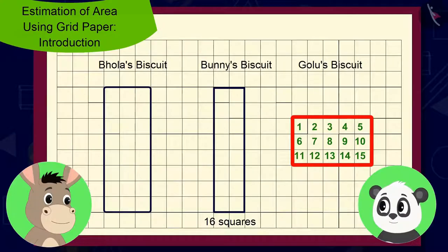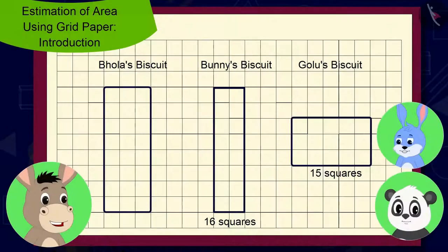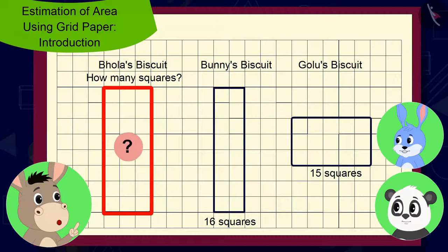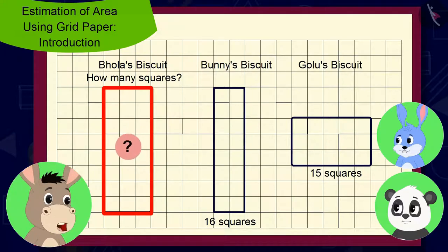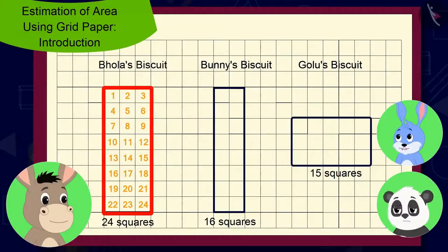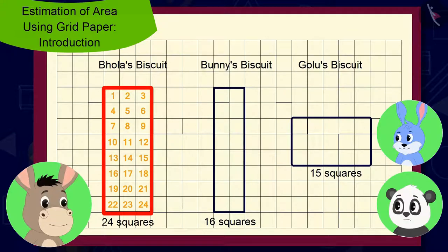Fifteen squares, said Golu. And can you both tell me how many squares are in the shape of my biscuit? Bhoola asked Bunni and Golu. Twenty-four squares? Twenty-four squares? Said Bunni and Golu, shocked.